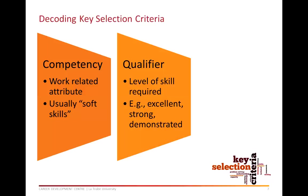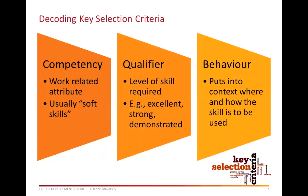Next is the qualifier. This refers to how well you can perform the competency. Usually the qualifier will be a word such as excellent, advanced, strong, demonstrated, or high level. The final component is the behaviour, which puts into context where and how the skill is to be used. The behaviours you exhibit when communicating with clients will be slightly different to when you are communicating with colleagues. When thinking about how to respond, start by analysing the statement to identify the skills and attributes being rated, and think of scenarios from work, study, volunteering, sports, and other activities that could illustrate your skill.